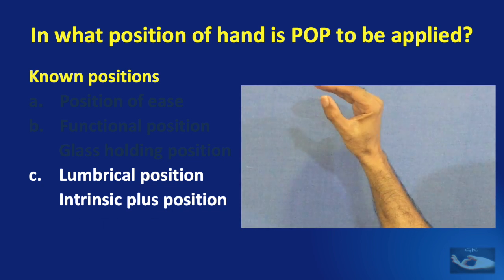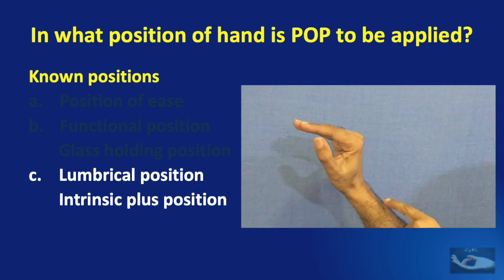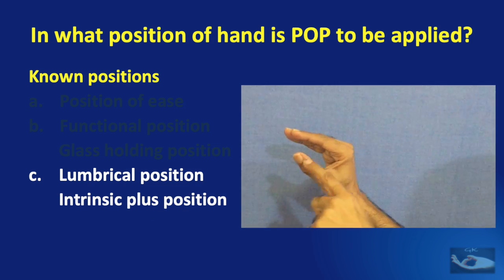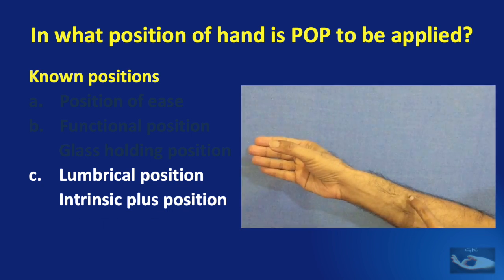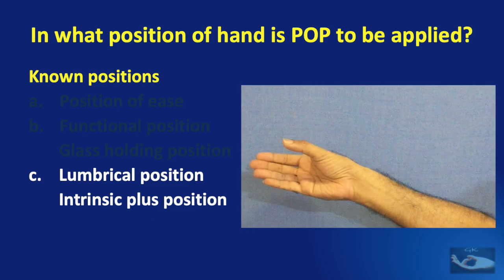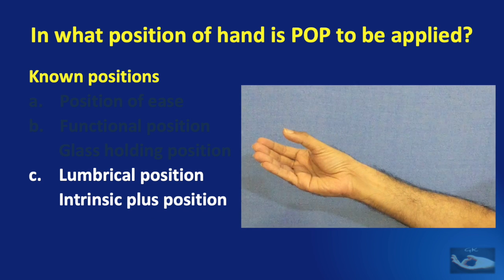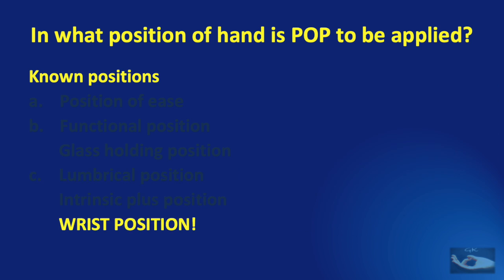The other important position of the hand in which it can be placed within the POP safely is the lumbrical position or intrinsic plus position. The difference between this and the functional position is that in the lumbrical position, the metacarpophalangeal joints are kept at 90 degrees and the interphalangeal joints are kept extended. The thumb is kept in a position of palmar abduction and the wrist is kept extended at about 30 degrees. It is important to note here that keeping the wrist in either a neutral position or extended position is the best position to immobilize the hand.